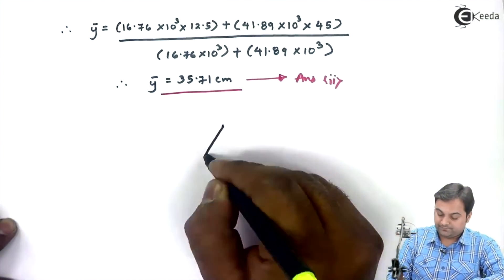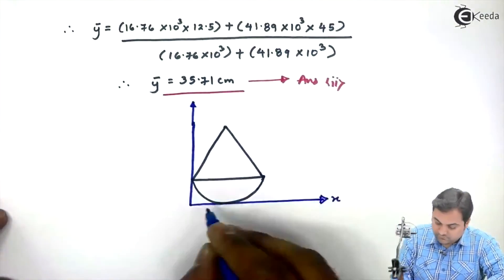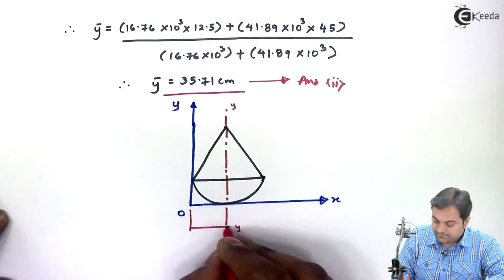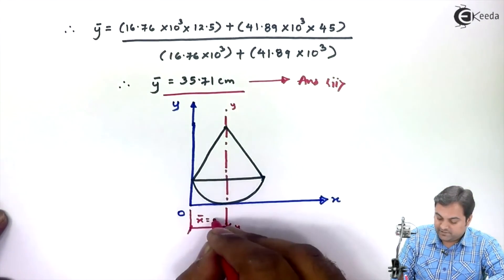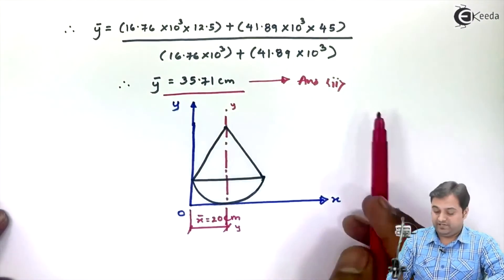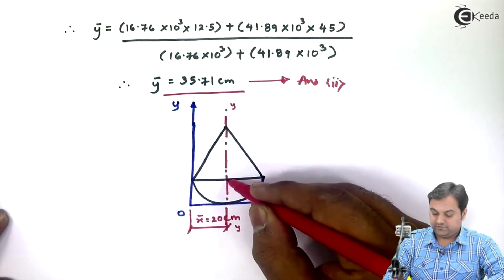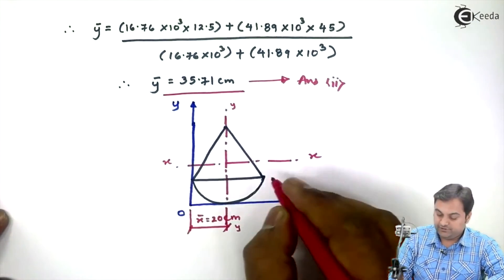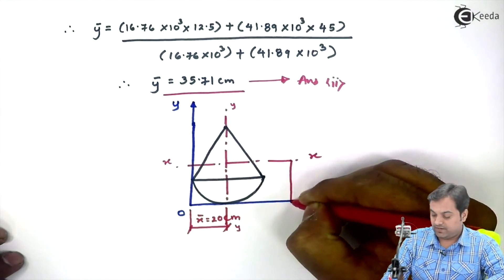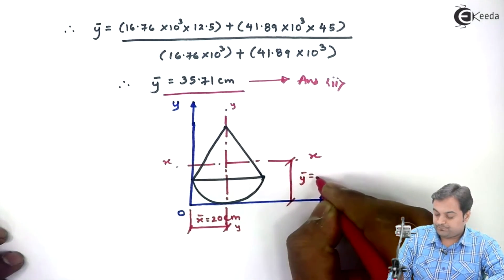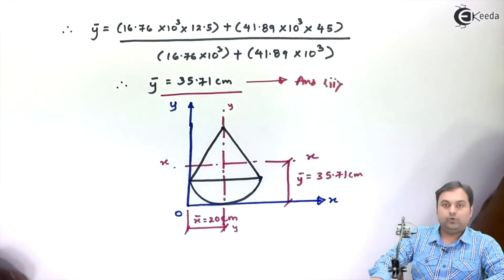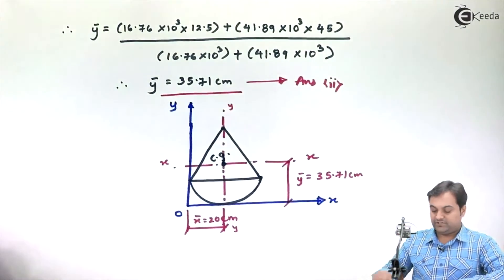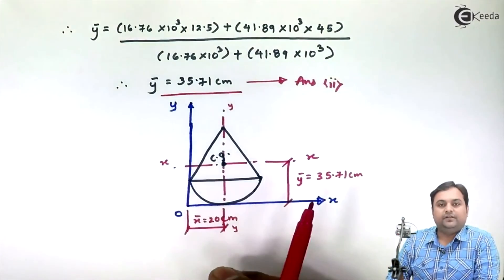Now I will plot the CG on the composite figure. The y-axis of the composite solid has x̄ equal to 20 centimeter, and we have calculated ȳ equal to 35.71 centimeter. Since the radius of the hemisphere is 20, the CG is just above that. Wherever the x-axis and y-axis intersect at these coordinates, that gives us the center of gravity of the composite solid. With this we complete the problem.